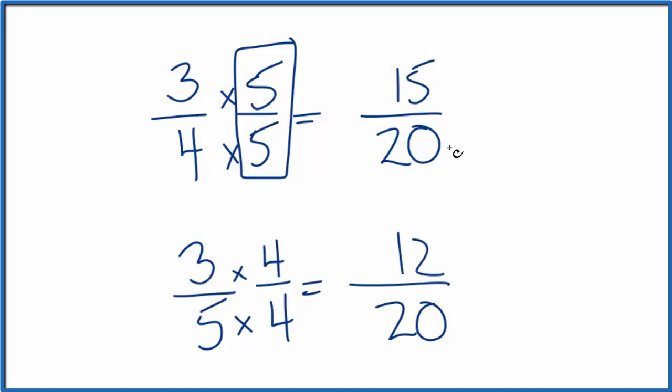And now I can compare these numerators here because I have the same denominator. And you can see fifteen is larger than twelve. So three-fourths, that's larger than three-fifths.